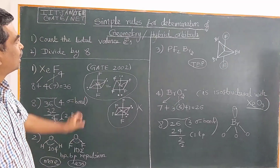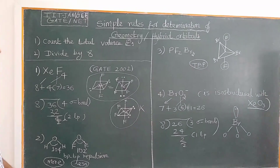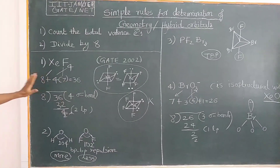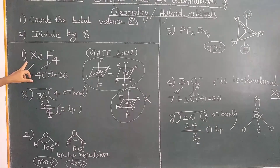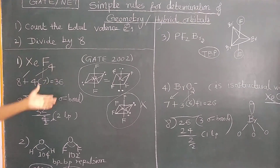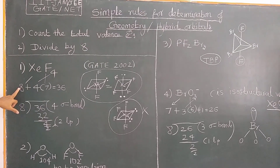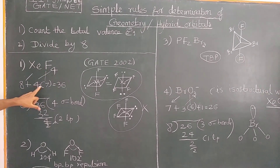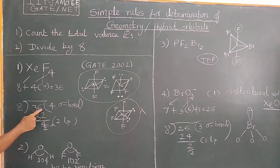Good morning. Let us continue with the simple rules for determining the geometry and hybridization of molecules. For XeF4, the total number of valence electrons is 8 + 4×7 = 36. Dividing by 8 gives a quotient of 4 (sigma bonds) with remainder 4, so there are 2 lone pairs. The hybridization is sp³d², corresponding to octahedral geometry.